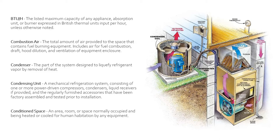Next is the condenser. That's the part of the system designed to liquefy refrigerant vapor by removal of heat. If you think about your house AC, you have the unit inside in the attic — that is your air handling unit. Then you have the condenser outside, which is the square or cylinder piece outside your house with the fan in it. It turns the refrigerant from a vapor back into a liquid. The condensing unit is the mechanical refrigeration system consisting of one or more power-driven compressors, condensers, liquid receivers if provided, and regularly furnished accessories factory assembled and tested prior to installation.